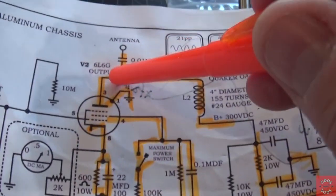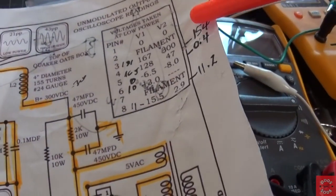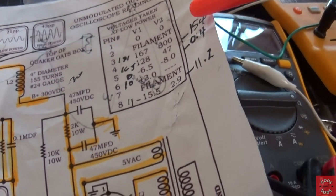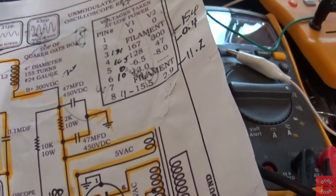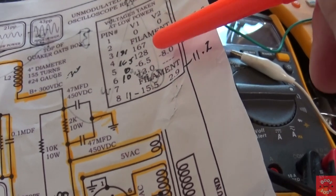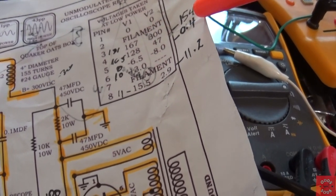On V2, which is the 6L6, pin 3 is normal. Pin 4, I'm supposed to have 47 volts. I have 154. Pin 5, I'm supposed to have negative 8. I have 0.4 positive.